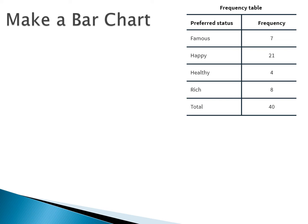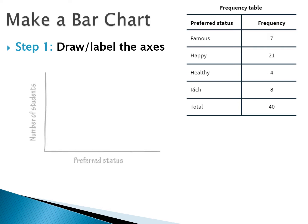We have our data set that we talked about in section 1.1 of the 40 students choosing whether to be famous, happy, healthy, or rich. Step one: we're going to draw and label the axes for our bar chart.